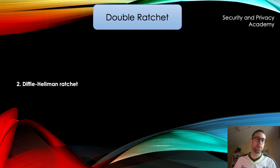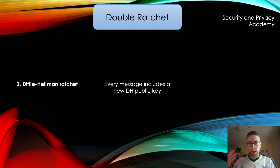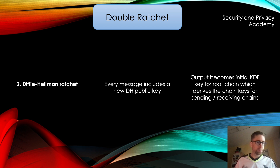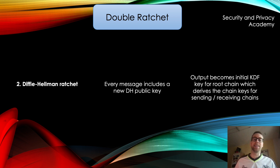The second ratchet of the Double Ratchet Algorithm is the Diffie-Hellman ratchet. Every message sent using the Signal protocol includes a new Diffie-Hellman public key. As stated previously, this is stored on the server if the conversation partner is not online at the same time, which is how Signal enables asynchronous communication. The output of the Diffie-Hellman key exchange — specifically the Extended Triple Diffie-Hellman X3DH we covered earlier — becomes the initial KDF key for the root chain. Remember, we have three chains: root, sending, and receiving. The output keys of the root chain are used as the initial chain keys for the sending and receiving chains of the conversation partners.